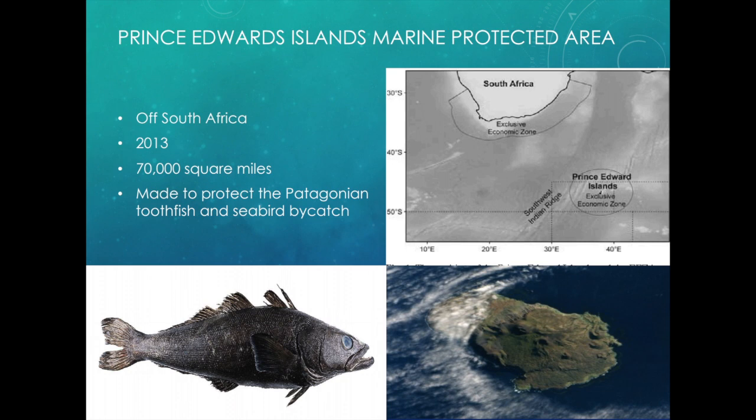Then we have the Prince Edward Islands Marine Protected Area, located off of South Africa on a group of little islands just south of South Africa. It was created in 2013 and is 70,000 square miles. It was actually created to protect the Patagonian toothfish — a very strange-looking fish. It was created to protect those fish and to prevent seabird bycatch, as there was so much fishing going on that the Patagonian toothfish was declining rapidly. It's a very important base of the food chain, so seabirds, mammals, and sharks relied on it.